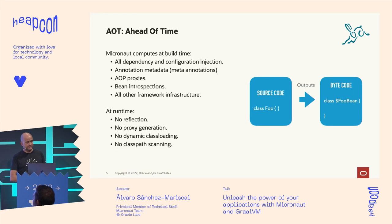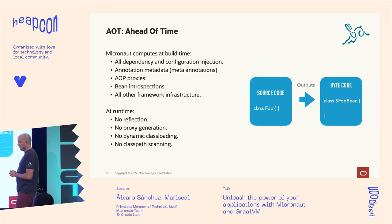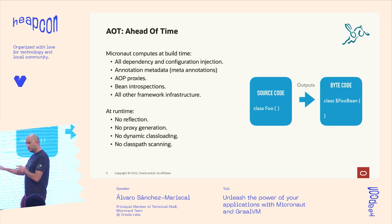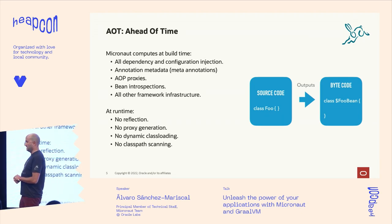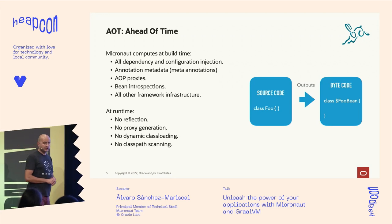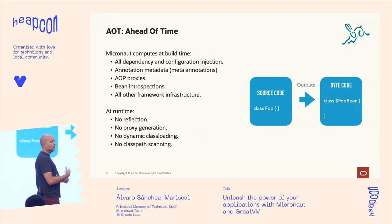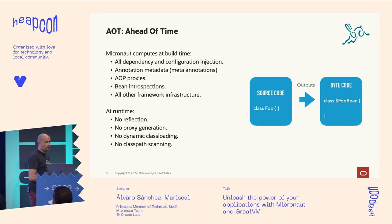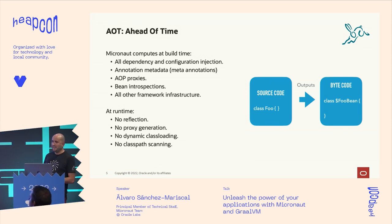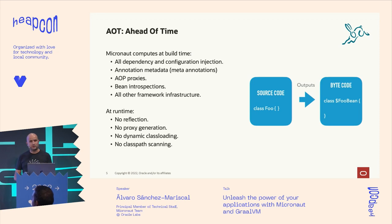This is called AOT — ahead-of-time compilation. Other frameworks in the Java ecosystem are doing the same now, but we were the first. In Spring, when you have an autowired annotation, Spring at runtime generates a dynamic proxy on the fly. We do it differently — we generate a class at compile time. There's no reflection, no proxy generation, no dynamic class loading, and we don't scan your classpath at all.